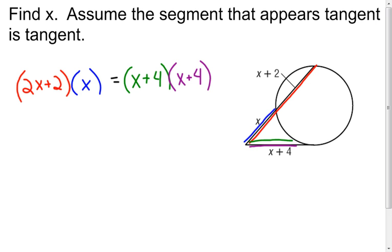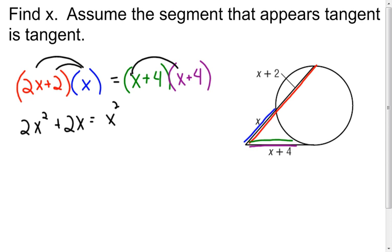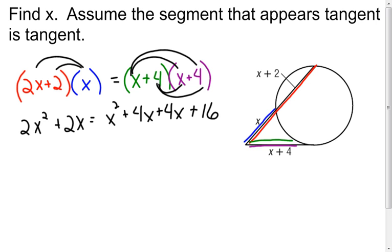This one's going to get a little messier, but it's something we can still do. If I distribute, I'm going to end up with 2x squared plus 2x equal to — and then on this side I'm going to have to FOIL: first x squared, my outsides 4x, my insides 4x, and my last 16. Now, I look at this and I have x squareds in this equation, so I have a quadratic equation.